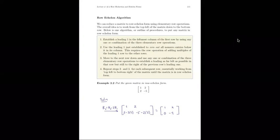We multiply row 2 by negative one-ninth, leaving us with 1, 2 in row 1 and 0, 1 in row 2. Now we have leading ones stepping right as we step down, so we're in row echelon form. This is our row-equivalent matrix. That's a 2-by-2 — usually a couple of steps to get into row echelon form.